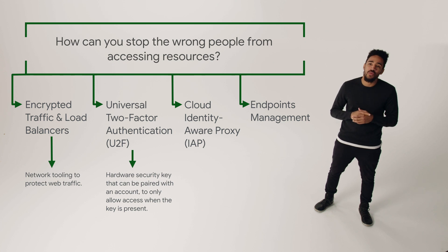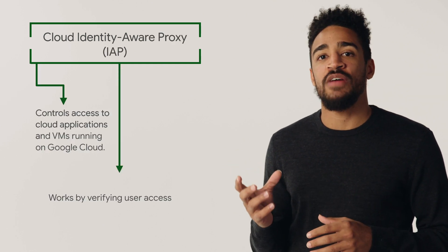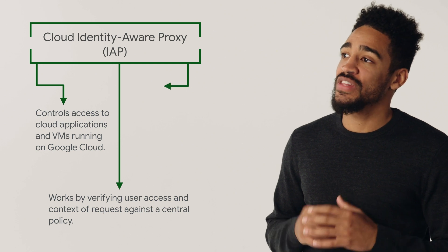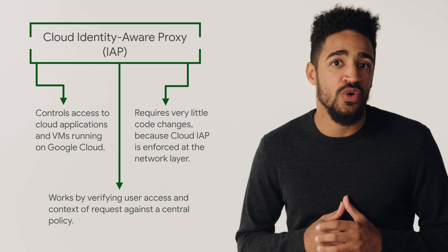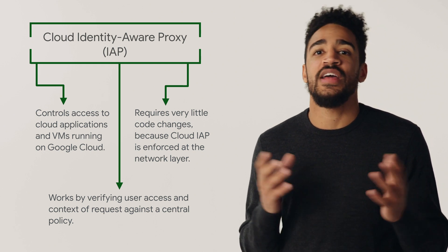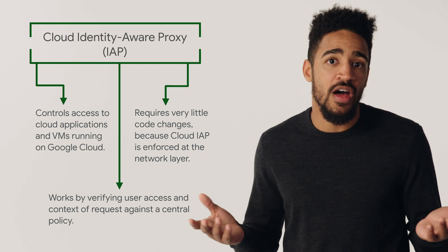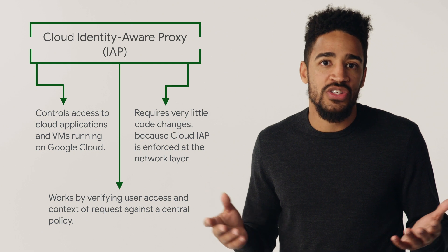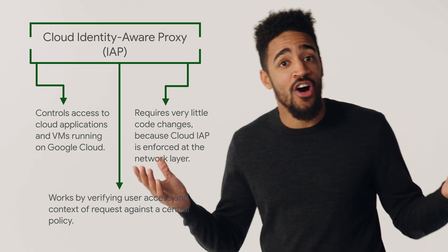What about Cloud Identity-Aware Proxy, or IAP? IAP makes it easy for you to put up an application on the cloud and configure a central policy users have to authenticate against. Best of all, since IAP is enforced at the network layer, Cloud IAP requires little to no application code changes. So, if you had a legacy application that was hosted on-premise, behind a firewall, and wanted to migrate it to a public endpoint on the cloud, you could drop Cloud IAP in front of it to require authentication and authorization against a Google Group or G Suite domain, with little to no changes to the application at all.